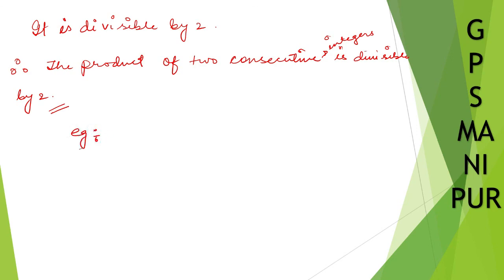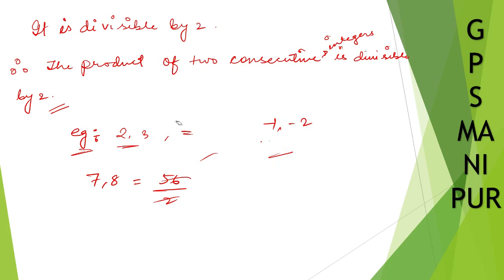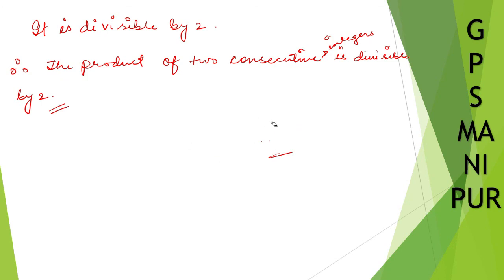To give an example: two consecutive numbers two and three — multiply them to get six, which is divisible by two. Or take seven and eight — seven times eight is 56, which is also divisible by two. You can take any two consecutive integers, such as minus one and minus two — their product is two, which is divisible by two. Any two consecutive integers multiplied together will be divisible by two — that is what our proof means. Thank you so much, we'll meet in the next video.